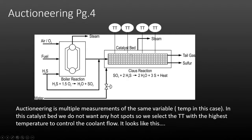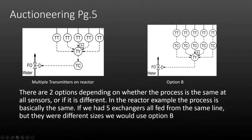We don't want any hot spots that will increase the reaction rate faster than we can handle it, so we select the temperature transmitter with the highest recorded temperature in order to control the coolant flow — this valve that controls the cooling water. There are a couple of ways to do auctioneering: either individual controllers for each transmitter, or one controller with multiple transmitters feeding their information to one selector.